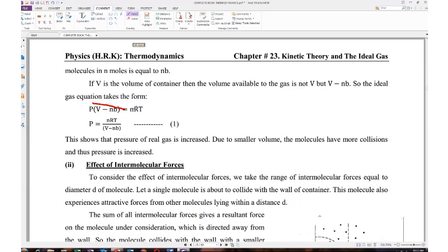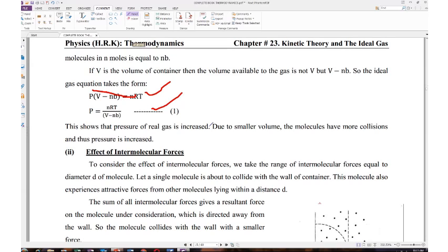P is equal to nRT divided by volume minus size of molecule. Volume is increased where we put a peak value in calling equation one. This shows that the pressure of real gas is increased. Pressure of real gas increases due to smaller volume. The molecules have more collisions and thus pressure is increased.